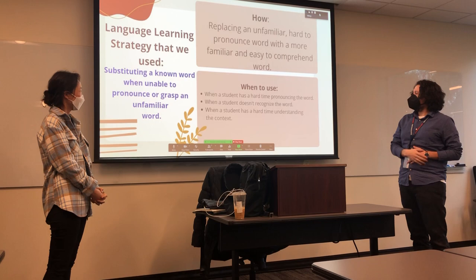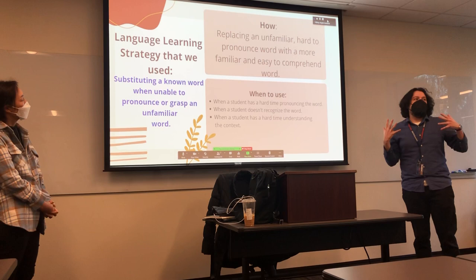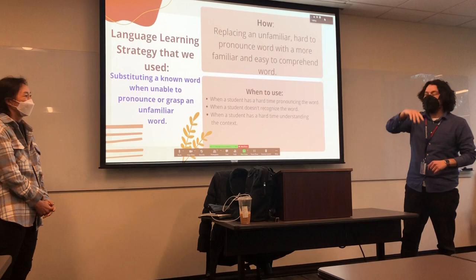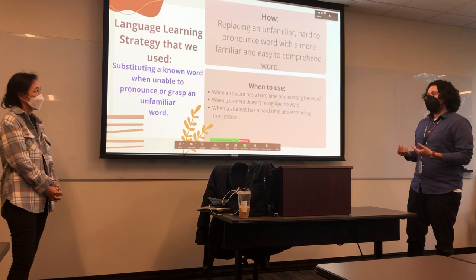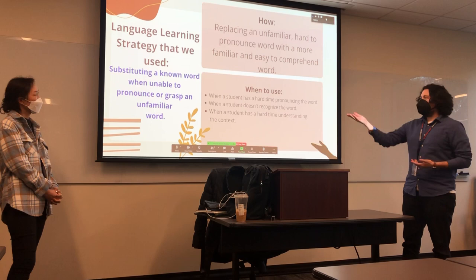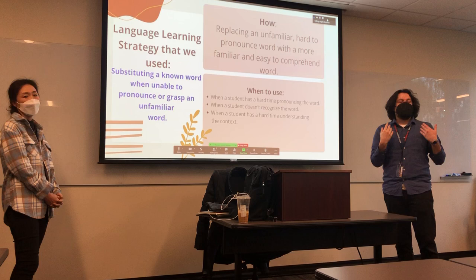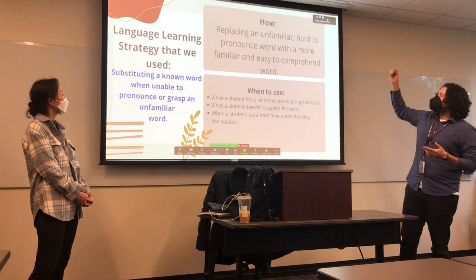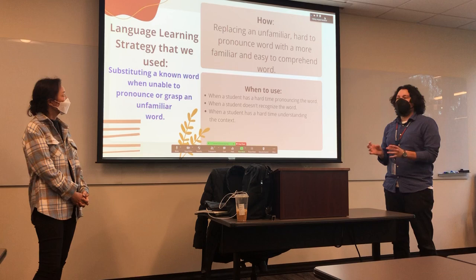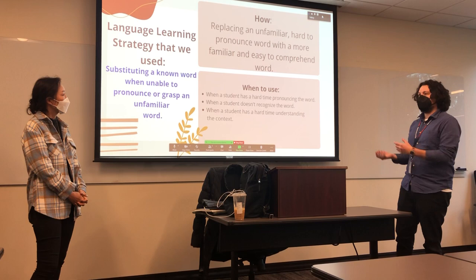So the strategy that we used — I wanted to take this from a lens of a science teacher. I teach a lot of vocabulary, and a lot of it is really wordy and jargony, and I'm sure in history too there is a lot of that as well. So the strategy that we picked is substituting a known word when unable to pronounce or grasp an unfamiliar word. So if I'm trying to teach something that's really confusing or wordy — like heterozygote — I really like this strategy because you basically just replace that unfamiliar word with something that's easier for them to digest. Maybe one that's shorter, one that has more familiar phonemes. Something that's going to be easier to pronounce and understand, and maybe something that has context to that EL learner's life more than just some wordy science jargon.